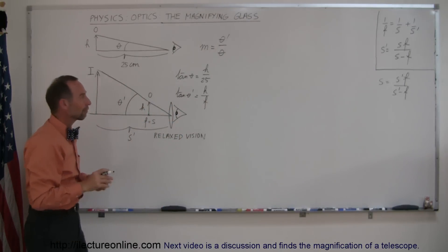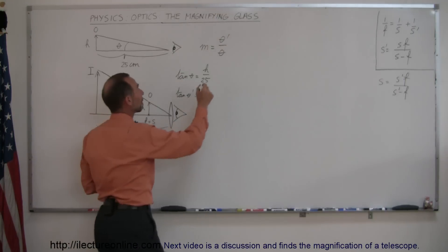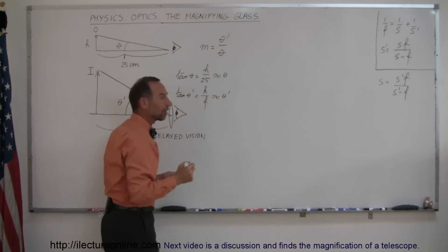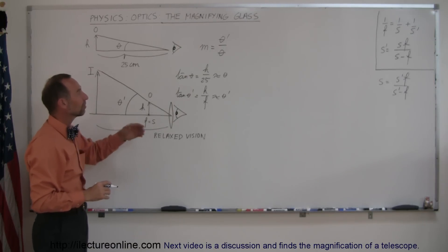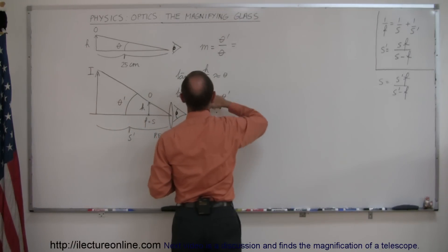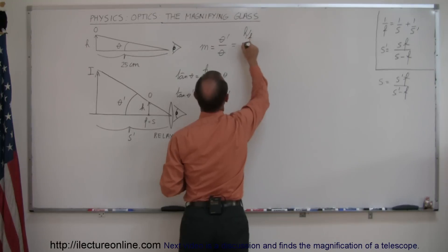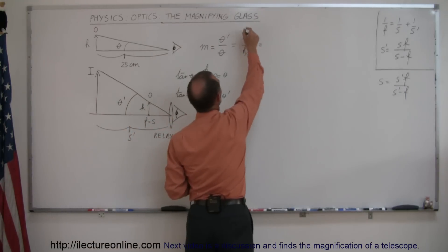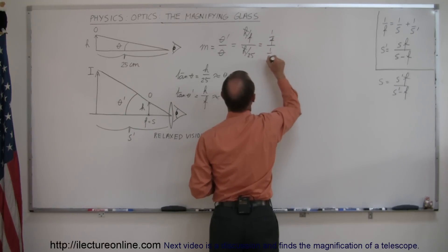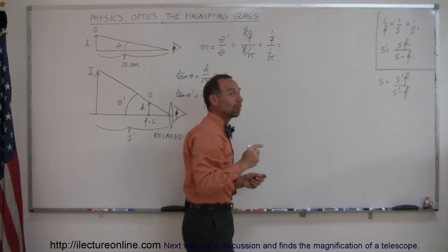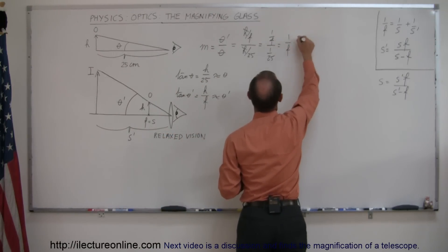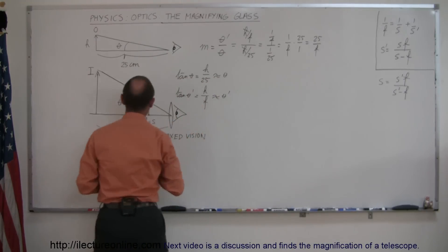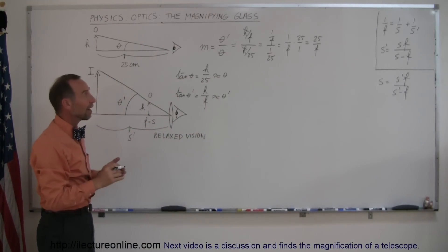We can use the trick where for very small angles the tangent of theta is approximately equal to theta, and the tangent of theta prime is approximately equal to theta prime — for very small angles it's virtually exactly the same. We can then say that the magnification is equal to the ratio of those two quantities. In other words, theta prime equals h over f and theta equals h divided by 25. We can cancel out the h's, so we end up with 1 over f divided by 1 over 25, which is equal to 25 over f. The magnification of a magnifying glass is simply equal to 25 divided by the focal length.